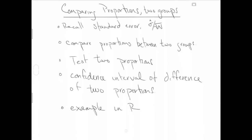The intuition I want you to have about a standard error is: as your sample size goes up, the uncertainty associated with your estimate of the sample mean will go down. As you collect more and more data, your uncertainty goes down because you know more things about the population. That intuition will remain through each next model in the class — even if the calculations get more complex, as your sample size goes up, uncertainty will go down.